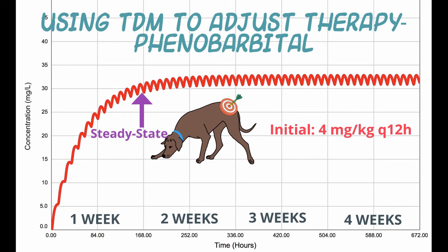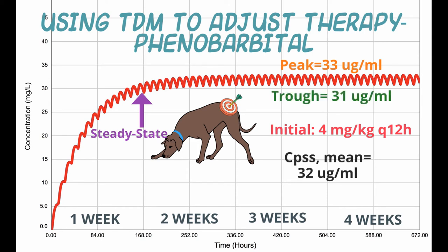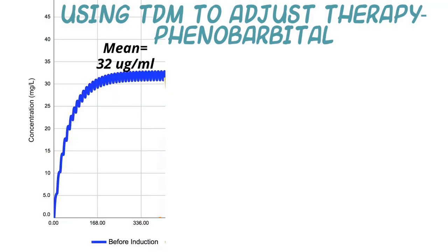In this case you can actually calculate the half-life, though we won't go through that here. The peak concentration is 33 micrograms per milliliter and the trough is about 31, giving a mean of about 32 micrograms per milliliter. There's not a major variation when you give a drug with that long a half-life at 12-hour intervals. Importantly, this concentration and regimen was successful in controlling seizures in this dog for approximately five months.